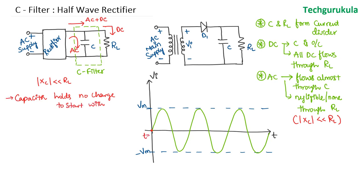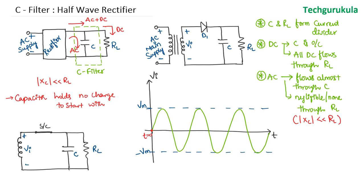Starting at T equal to 0, as the input is positive and the voltage across the capacitor is 0, diode D1 will be forward biased, acting like a short circuit. As time progresses with the diode forward biased, current would be flowing, and the voltage across the capacitor should be following the input at the output of the secondary winding. Hence, the capacitor will get charged till it reaches the peak value Vm. From T equal to 0 to T equal to T1, the capacitor keeps following the voltage by getting charged.